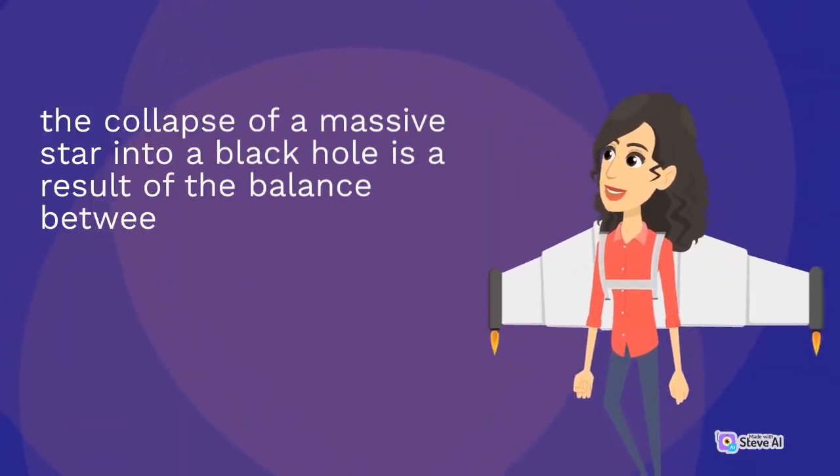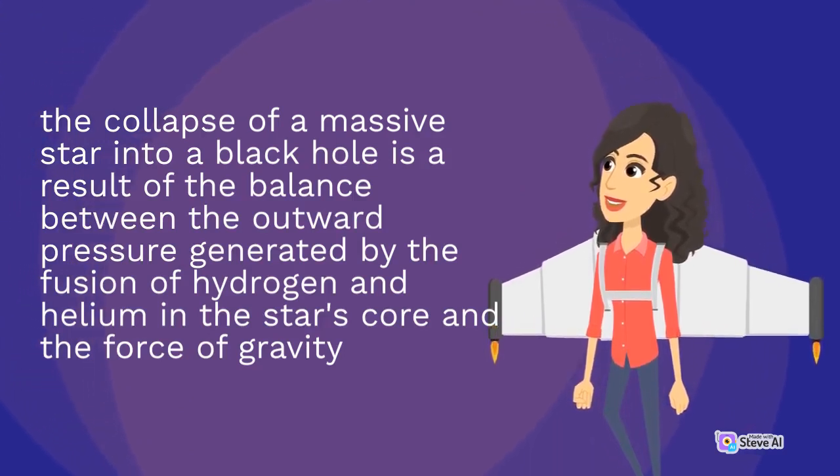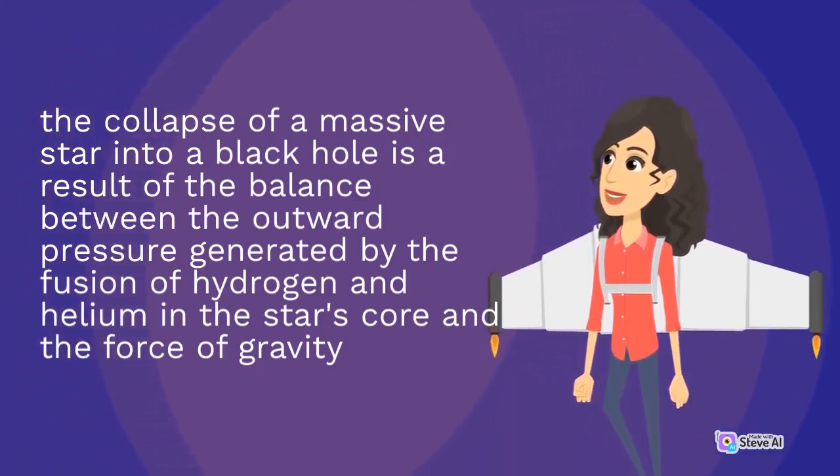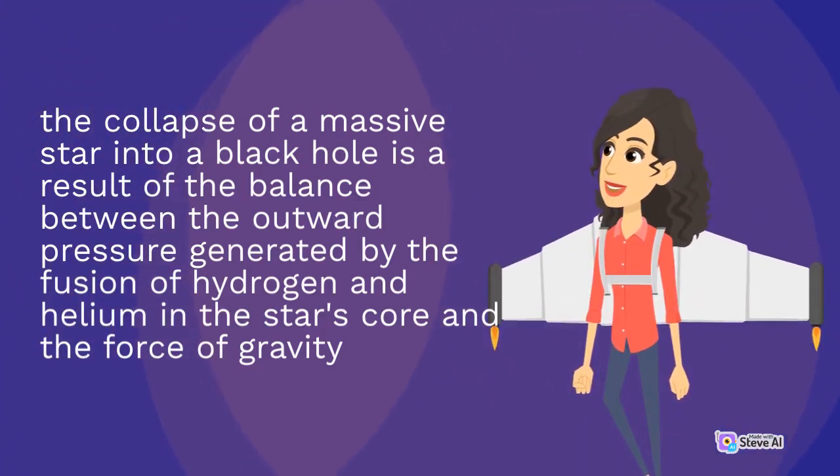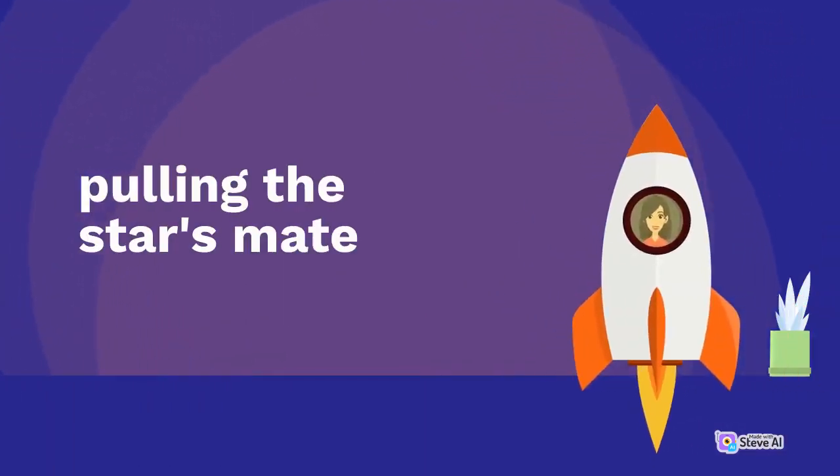The collapse of a massive star into a black hole is a result of the balance between the outward pressure generated by the fusion of hydrogen and helium in the star's core and the force of gravity pulling the star's material inward.